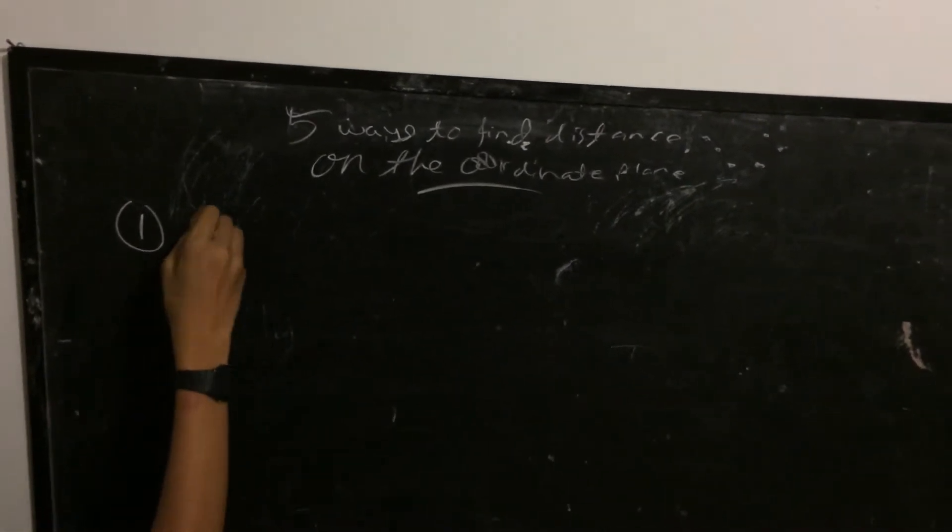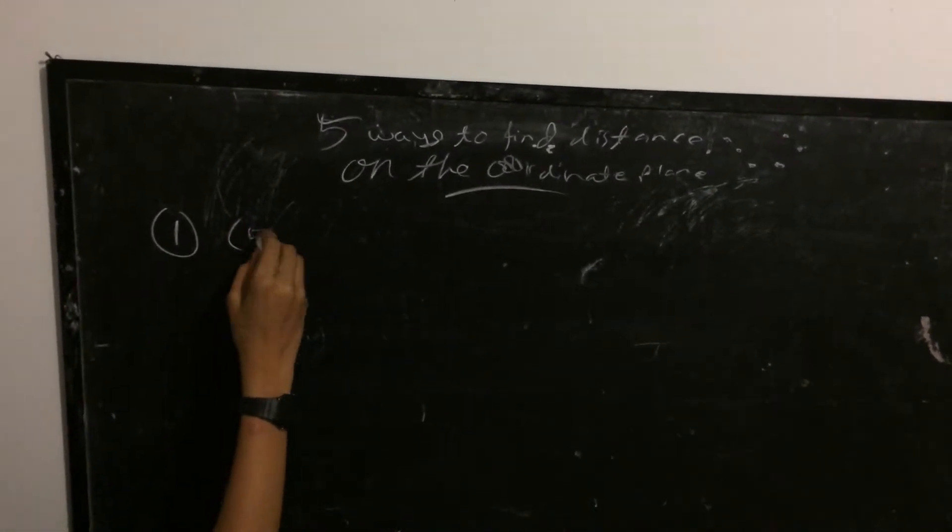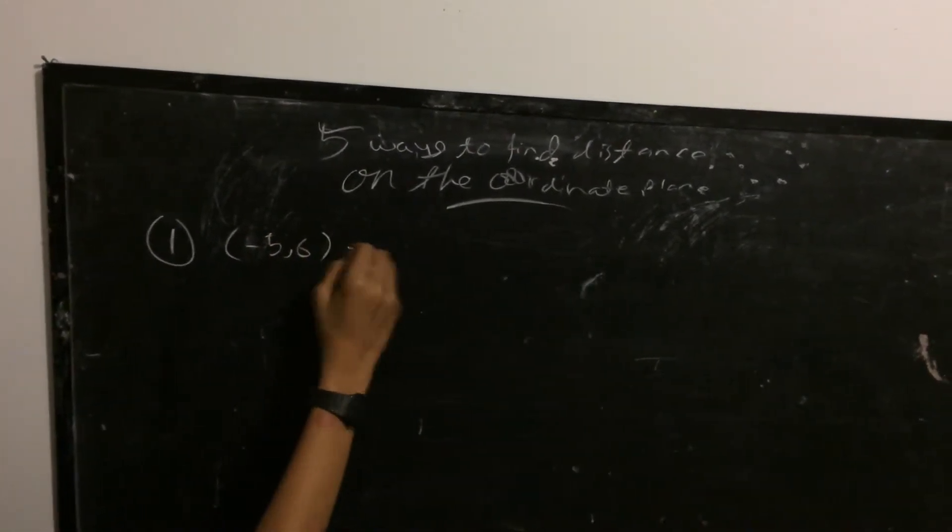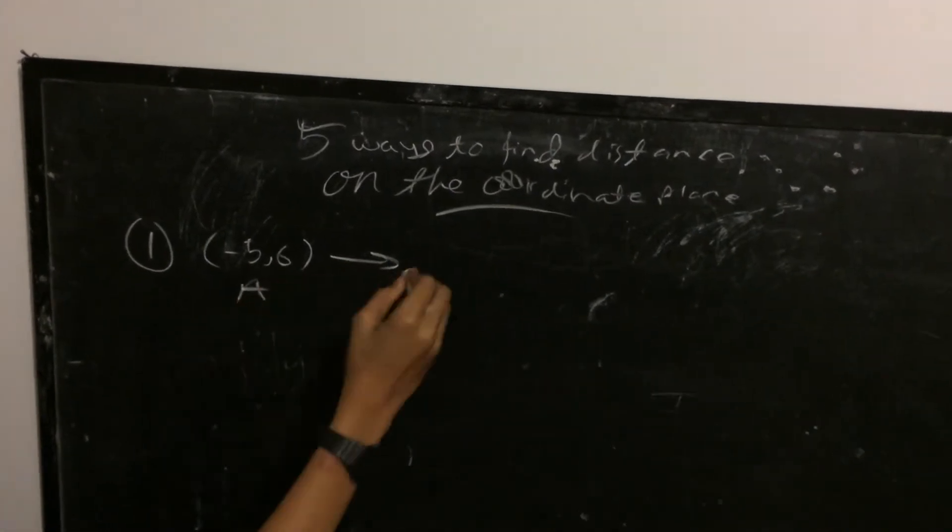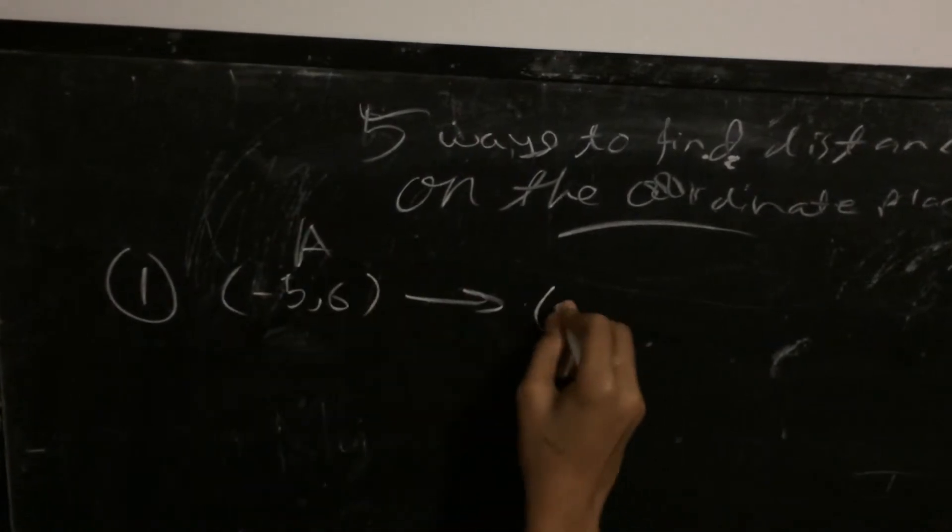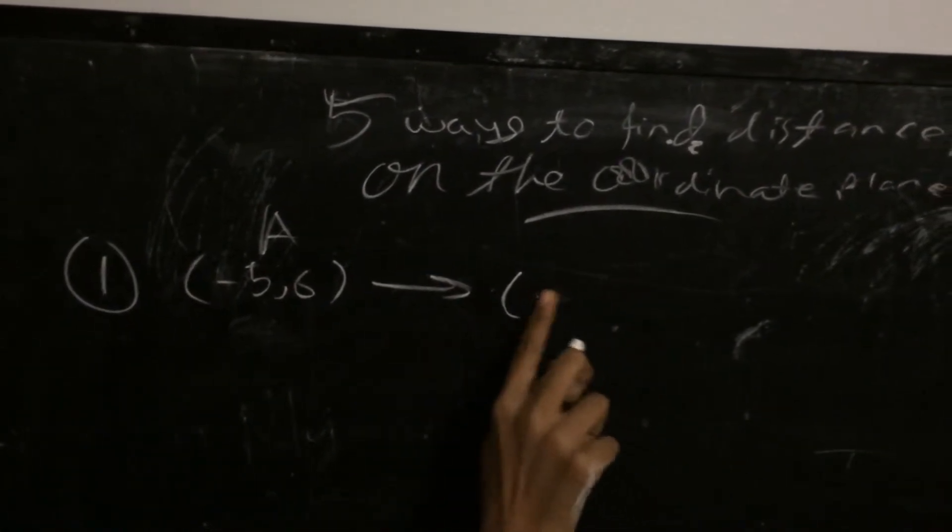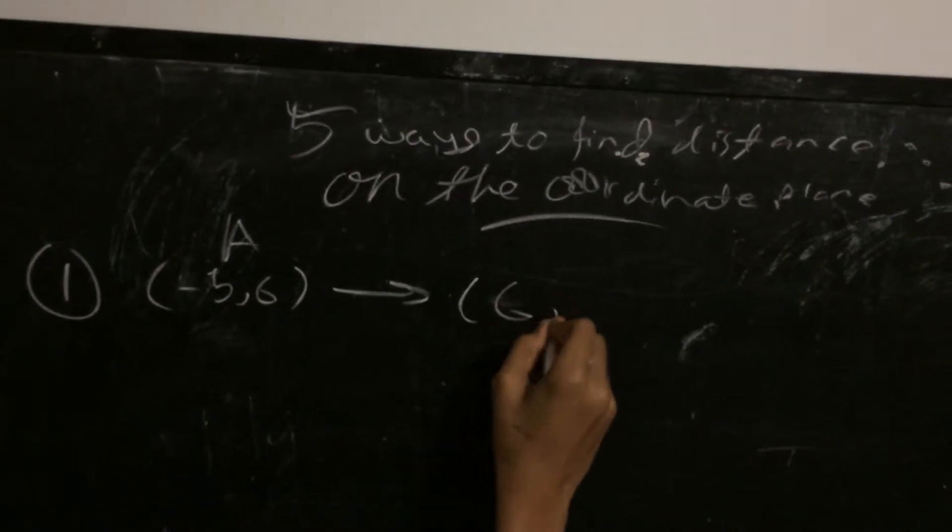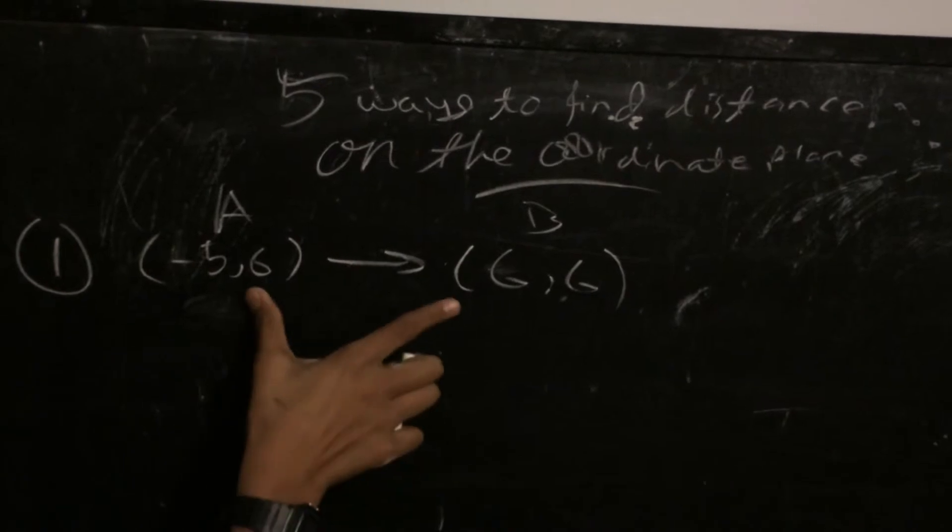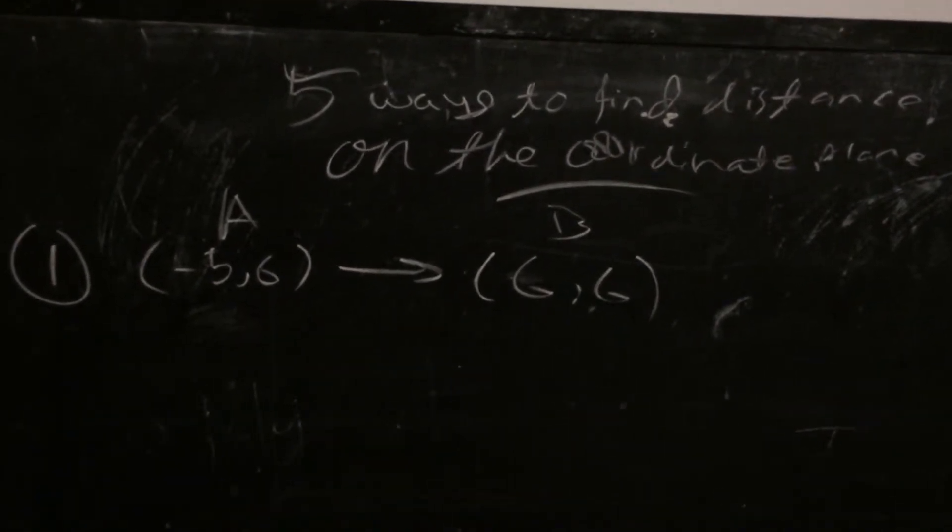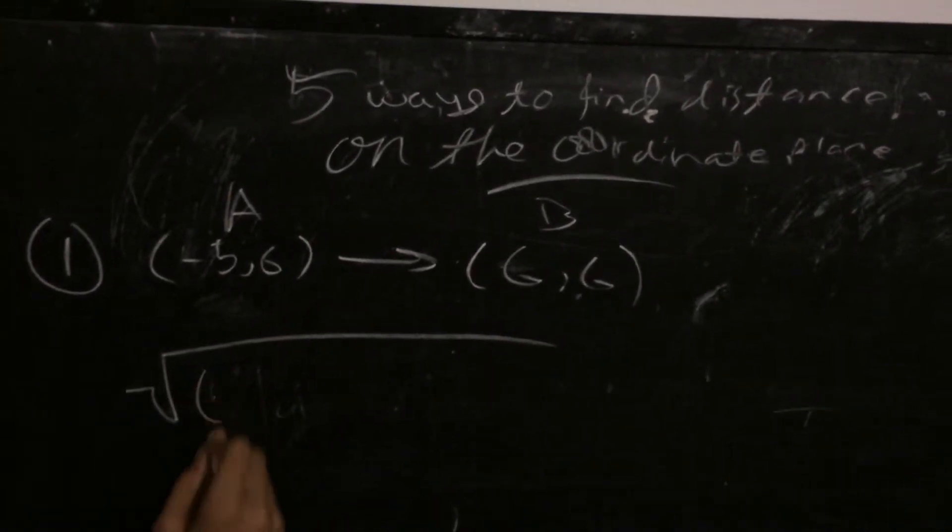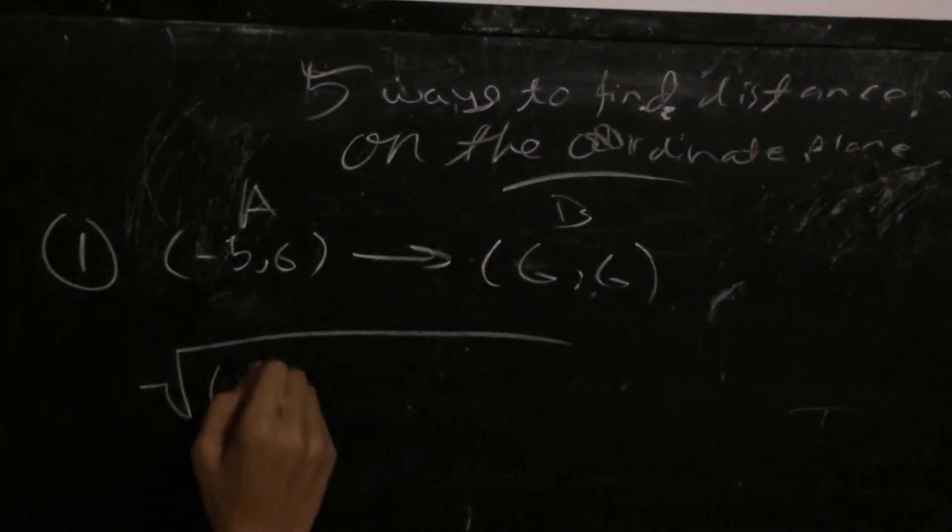Let's say (-5, 6) and that's point A, to (6, 6), so how can you find the distance between these two points A and B using the distance formula?